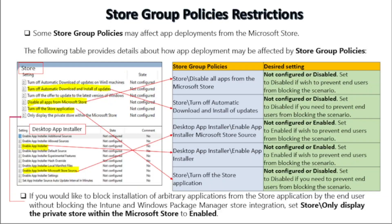Now let's talk about some of the store group policy restrictions which may affect app deployment from Microsoft Store. The first group policy is 'Disable all apps from Microsoft Store' and the desired setting should be set to Disabled. The second is 'Turn off automatic download and install of updates' and should be set to Disabled. The third is 'Enable App Installer Microsoft Store source' and should be set to Enabled. The fourth is 'Enable App Installer' and the desired setting is set to Disabled. The last one is 'Turn off the Store application' and the desired setting is set to Disabled.